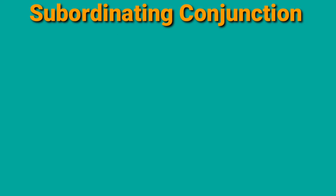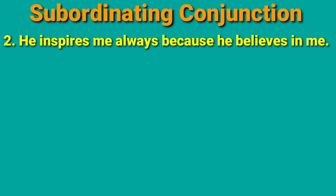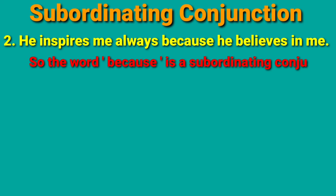Second example: he inspires me always because he believes in me. In this example, there are two sentences. The first is 'he inspires me' and the second is 'he believes in me.' In these two sentences, there is a connecting word 'because.' So, the word 'because' is a subordinating conjunction.